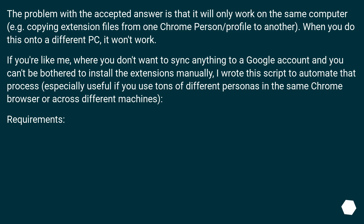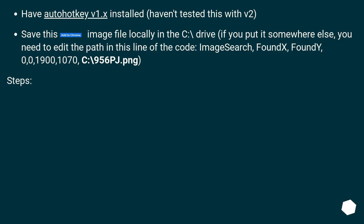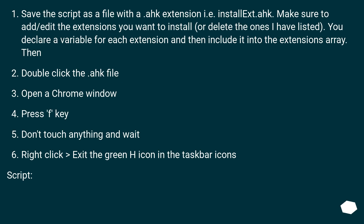Requirements: Have AutoHotkey v1.x installed — haven't tested this with v2. Save the image file locally in the C:\ drive. If you put it somewhere else, you need to edit the path in this line of the code: ImageSearch, foundX, foundY, 0, 0, 1900, 1070, C:\956pj.png. Save the script as a file with an .ahk extension, e.g. installX.ahk. Make sure to add or edit the extensions you want to install, or delete the ones listed. You declare a variable for each extension and then include it in the extensions array.